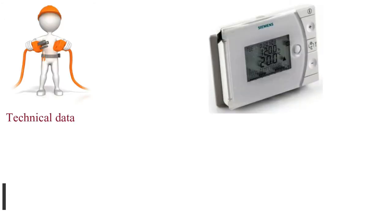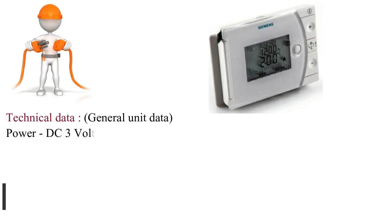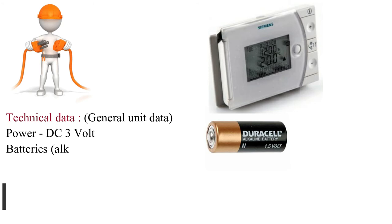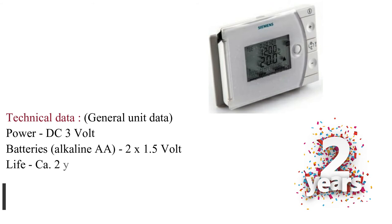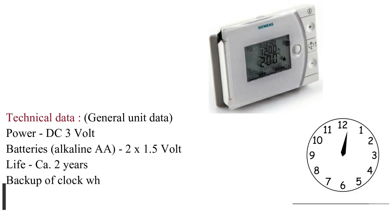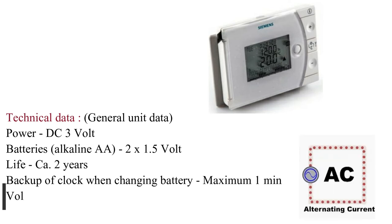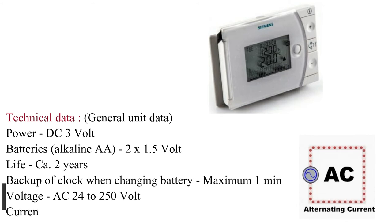The base with terminal block provides lots of space to connect the wires. Electrical data — general unit data: Power: DC 3 volts, batteries alkaline AA, 2 × 1.5 volt, battery life approximately 2 years, backup of clock when changing battery — maximum 1 minute.